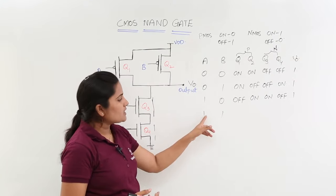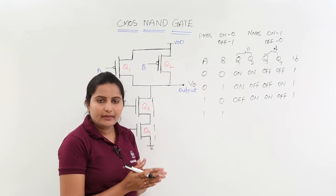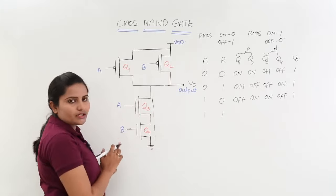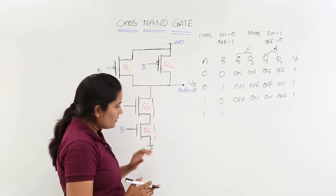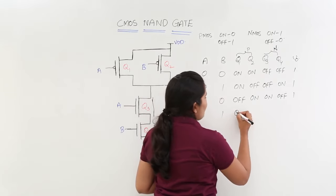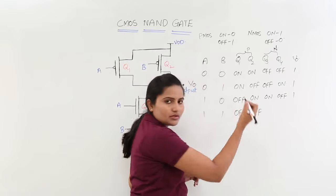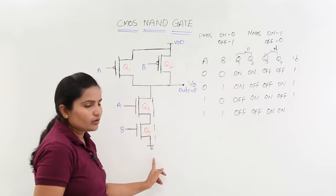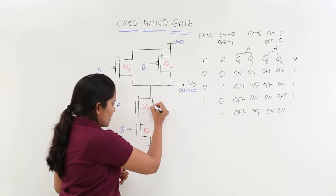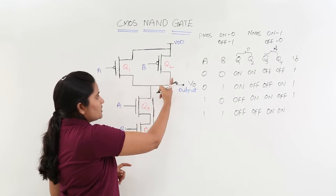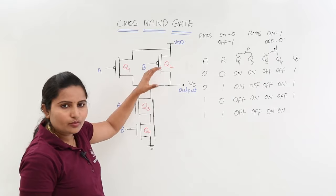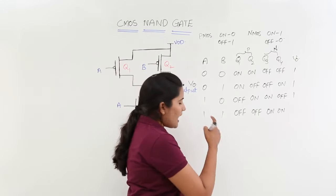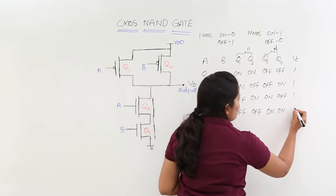In case of 1 1, both PMAS and NMAS inputs are given with 1, meaning A equal to 1, B equal to 1. Both PMAS are going to OFF, meaning you lose your connection from output to source voltage. Both NMAS are going to ON, meaning you get a short circuit path from output to ground. As Q1 and Q2 both PMAS are OFF, both have open circuit — there is no way to connect with VDD. So in this case, as the output is connecting to ground, you are going to get 0 volts at output.